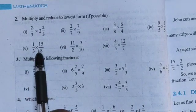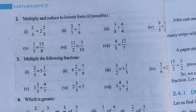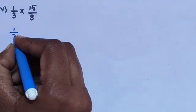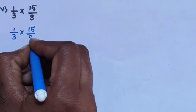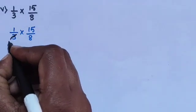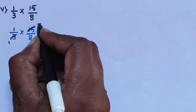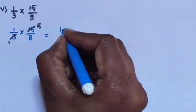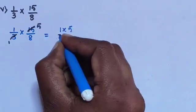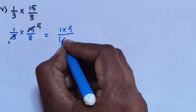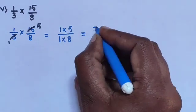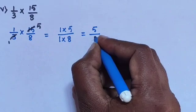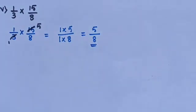Sub-question 5: 1/3 multiplied by 15/8. Then 3 and 15: 3 ones are 3, 3 fives are 15 — so 3 cancels into 15, leaving 5. Remaining: 1×5 divided by 1×8 equals 5/8. The answer is 5/8.